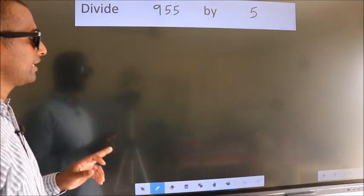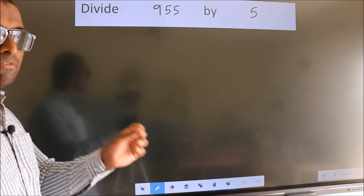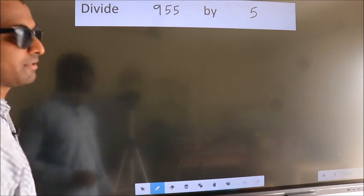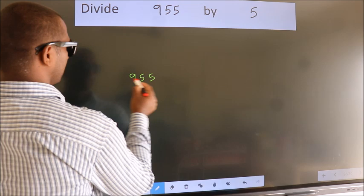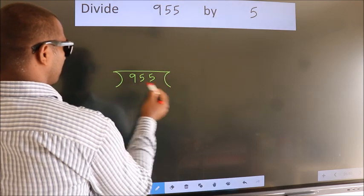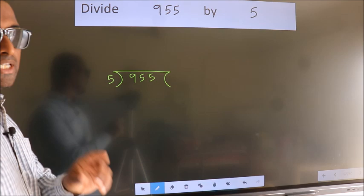Divide 955 by 5. To do this division, we should frame it in this way. 955 here, 5 here. This is your step 1.